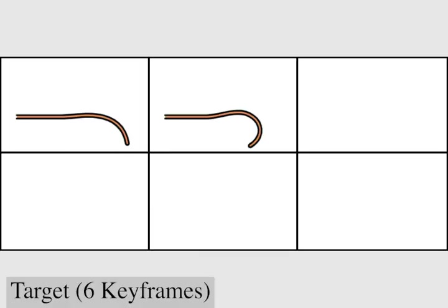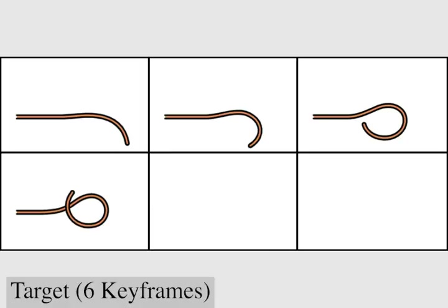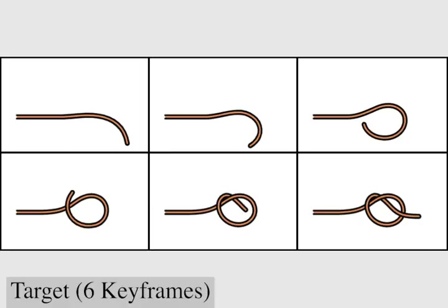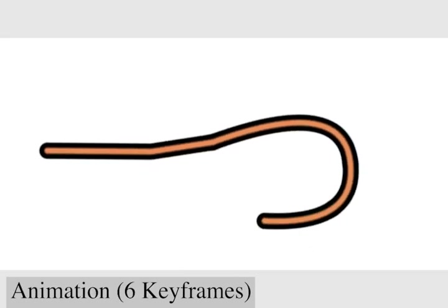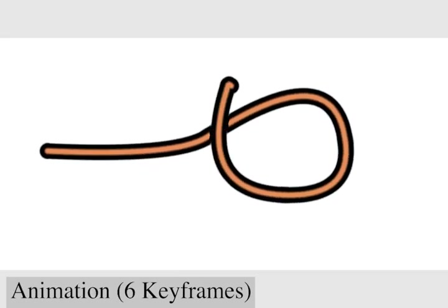Our last example extends the optimization framework so that a rope can animate to match a given set of keyframes. Here the rope illustrates tying a knot, passing through the given keyframes.